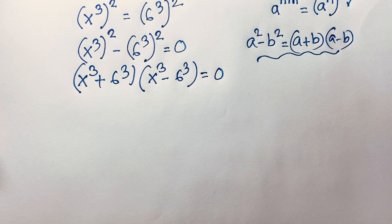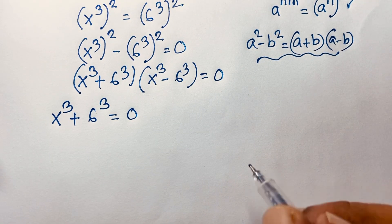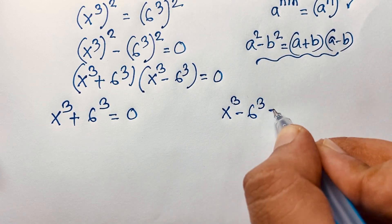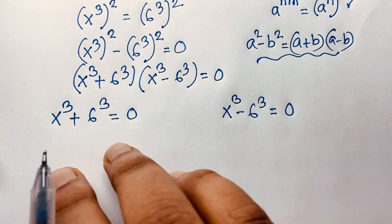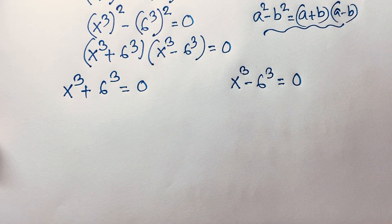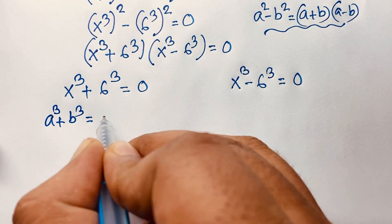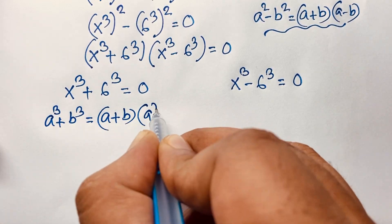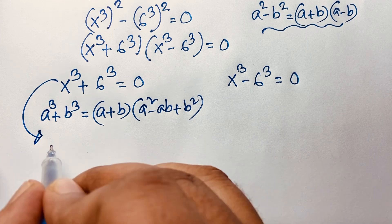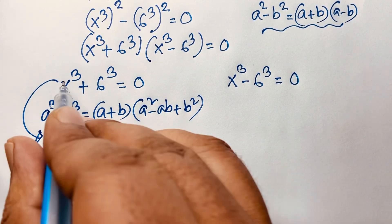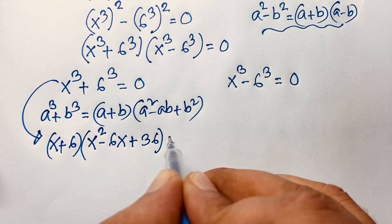This gives two cases. Case 1: x^3 + 6^3 = 0. Using the sum of cubes formula a^3 + b^3 = (a+b)(a^2 - ab + b^2), this becomes (x + 6)(x^2 - 6x + 36) = 0.